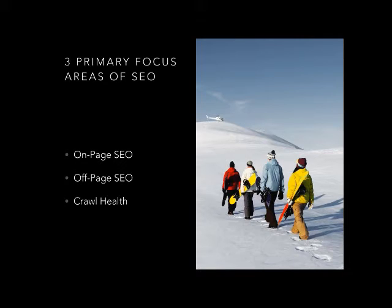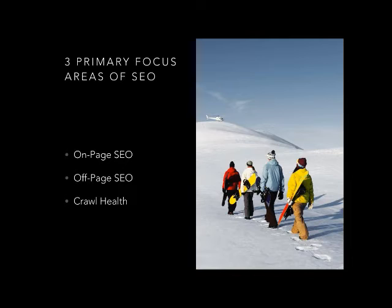The three primary focus areas of SEO we're going to cover today are on-page SEO, off-page SEO, and crawl health. On-page SEO is everything we're doing to the actual website itself — what pages we have, the structure of the website, what those pages are about, what content is on those pages, whether it's text, video, or images, and how we're optimizing that content.